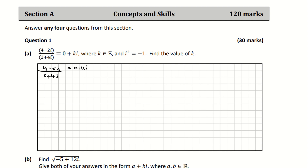I'm going to put that 0 plus ki over 1 and cross multiply. When I multiply 1 by 4 minus 2i I get 4 minus 2i is equal to 0 plus ki multiplied by 2 plus 4i. You can drop that 0 if you wish, so that gives me 4 minus 2i is equal to ki multiplied by 2, which is 2ki.